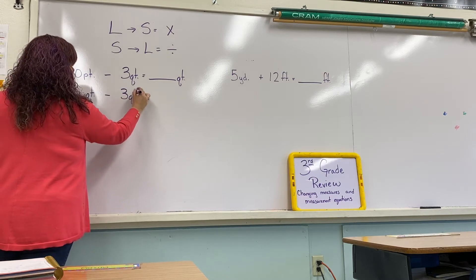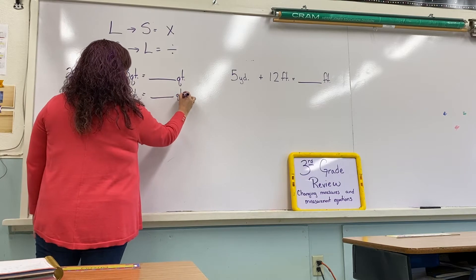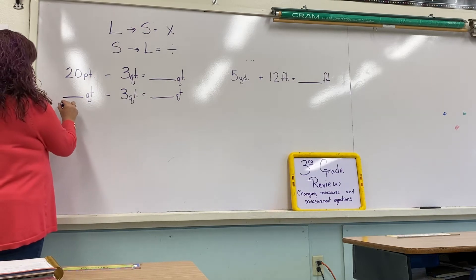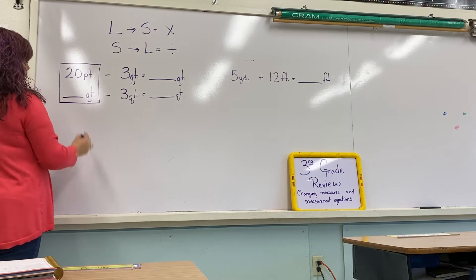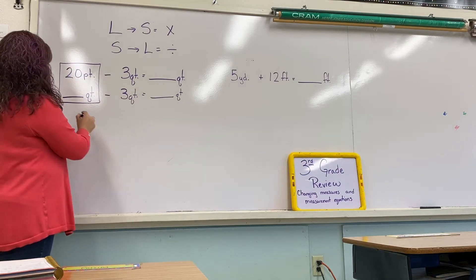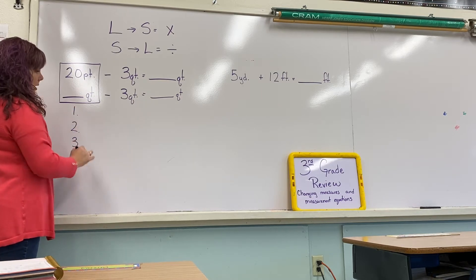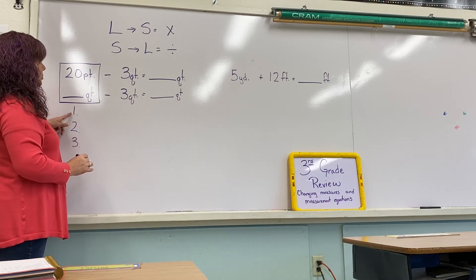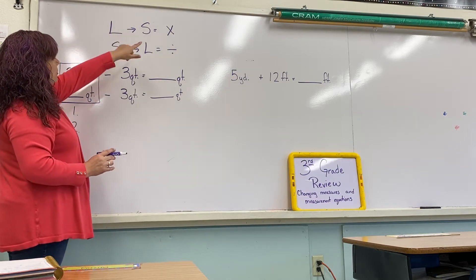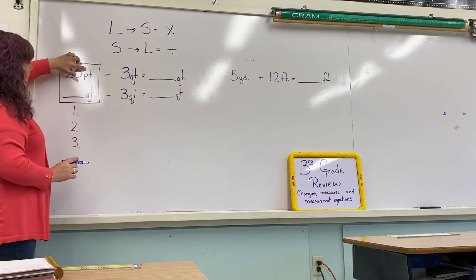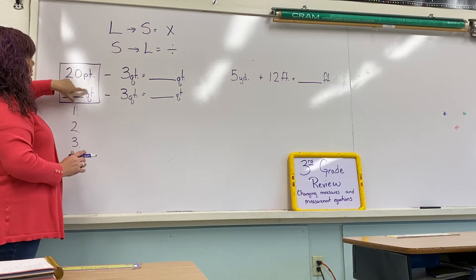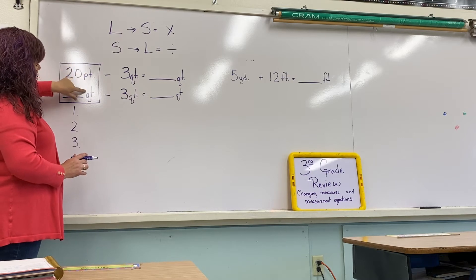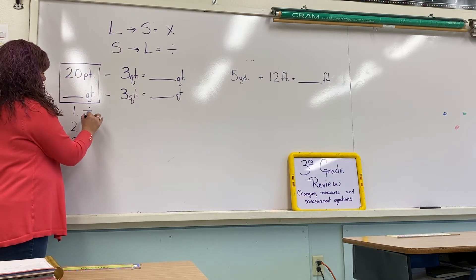Remember, when we know which one we're going to change, we're going to put a box around it so that we remember these are the numbers we're working with. Now we're going to write one, two, three, because each of our measurement-changing problems involves three steps. Step one is to find out which direction we're going — larger to smaller or smaller to larger. Pints to quarts: which one is larger? Yes, quarts is larger, so pints is smaller. We're going smaller to larger, so we're going to divide.